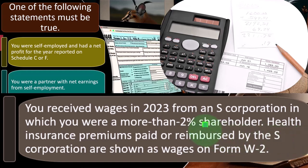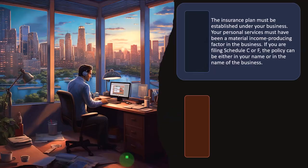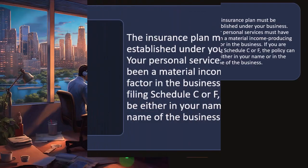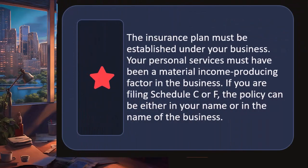You might have to understand more about flow-through entities and the consequences on things like health insurance. Health insurance premiums paid or reimbursed by the S corporation are shown as wages on Form W-2, because an S corporation still has to pay wages in the form of W-2s to employees.